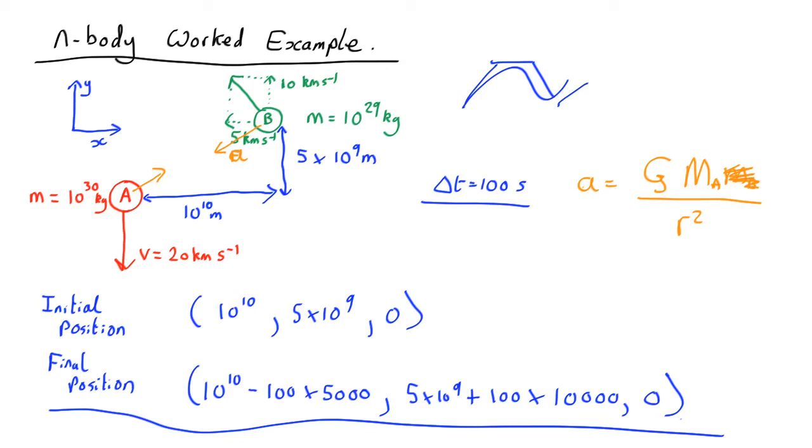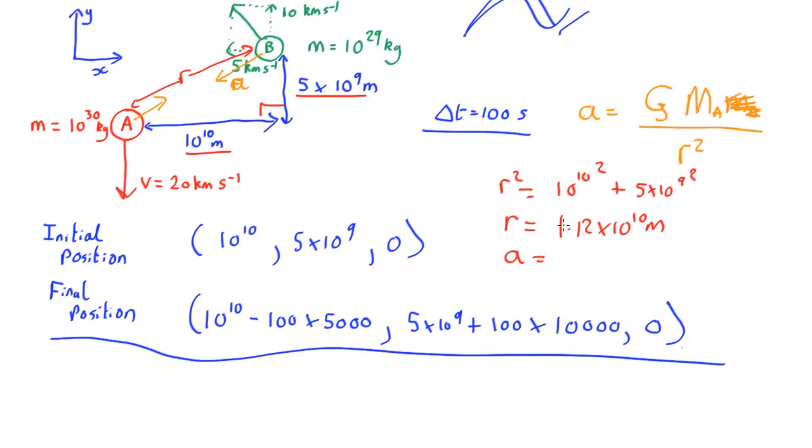What is r? We can work out r using Pythagoras' theorem. So r squared equals 10 to the 10 squared plus 5 by 10 to the 9 squared. Because this is a right angle triangle, you square this, add it to square that, and that gives you the square of this. And that actually comes out as r, you take the square root of both sides here, comes out as 1.12 by 10 to the 10 meters. So we calculate the acceleration using this, which comes out as 0.53 meters per second squared.